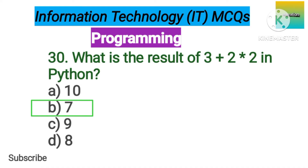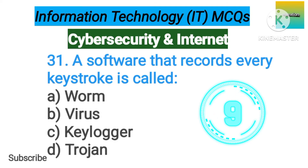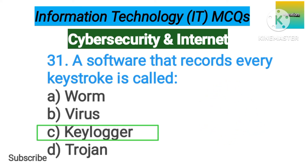Number 31. Cybersecurity and Internet. A software that records every keystroke is called option A: Worm. B: Virus. C: Keylogger. D: Trojan. The correct answer is option C, Keylogger.